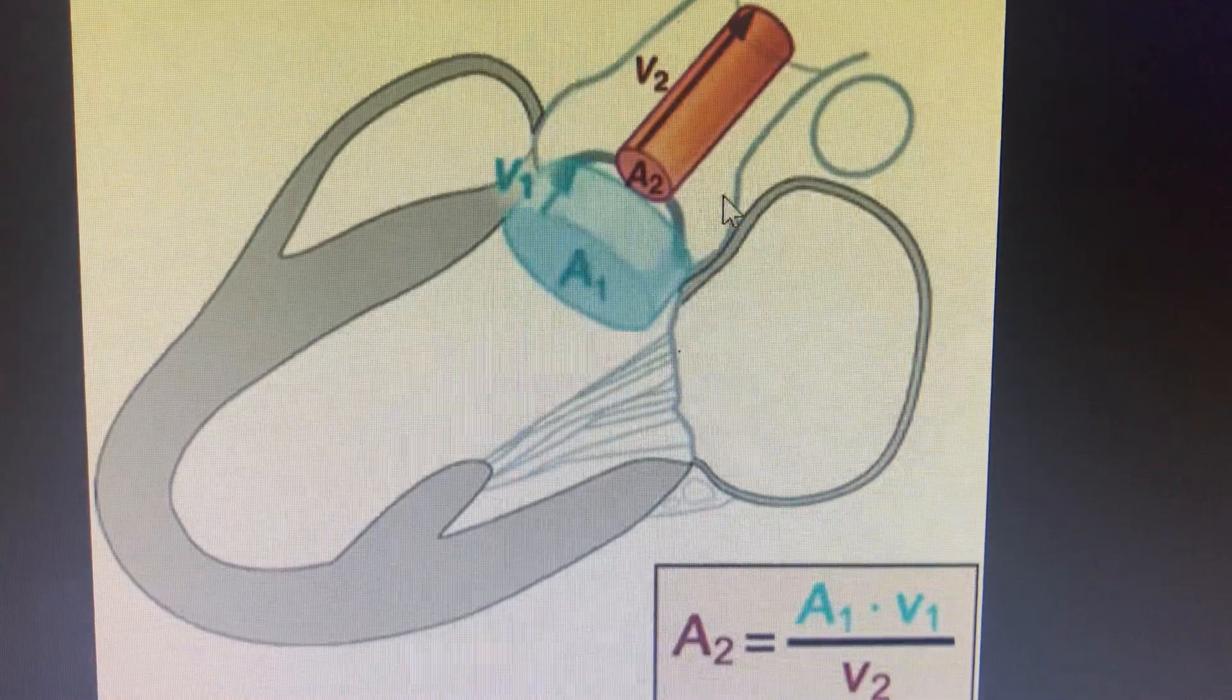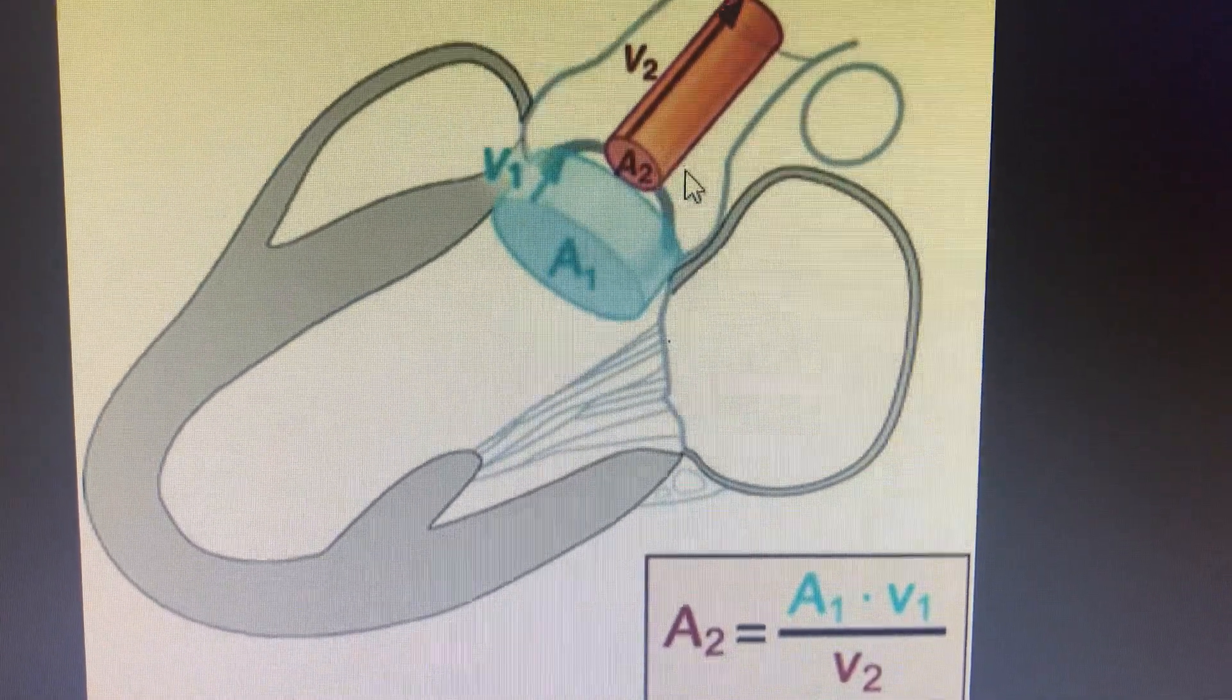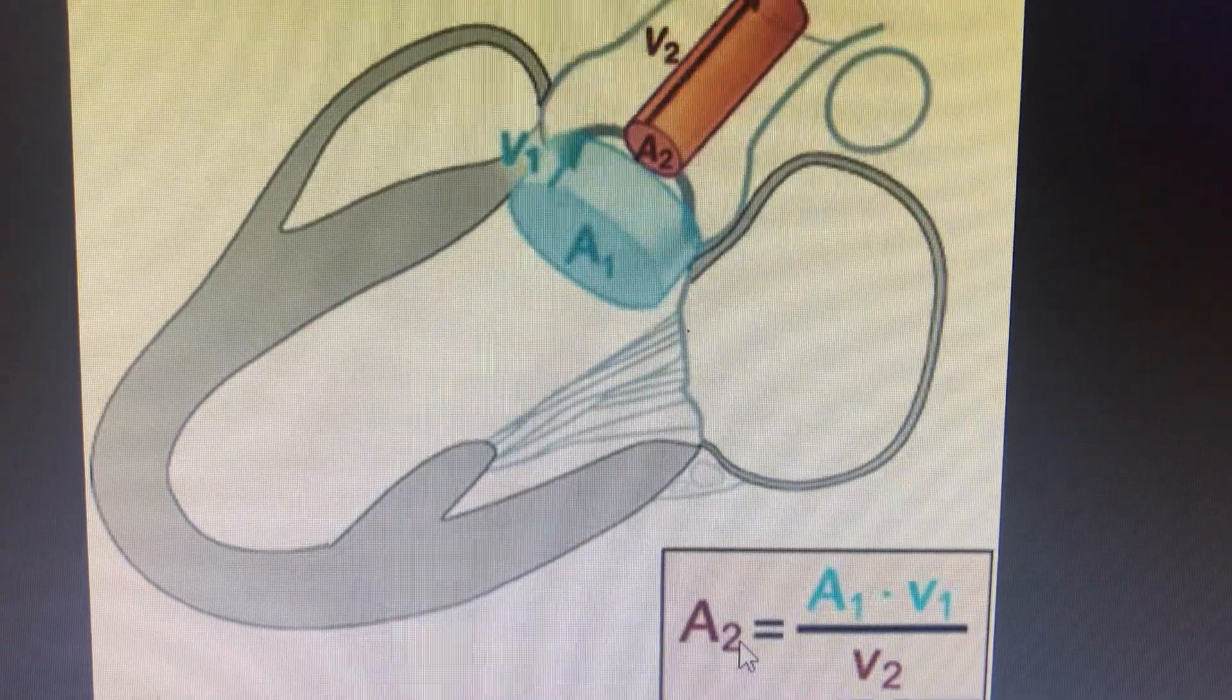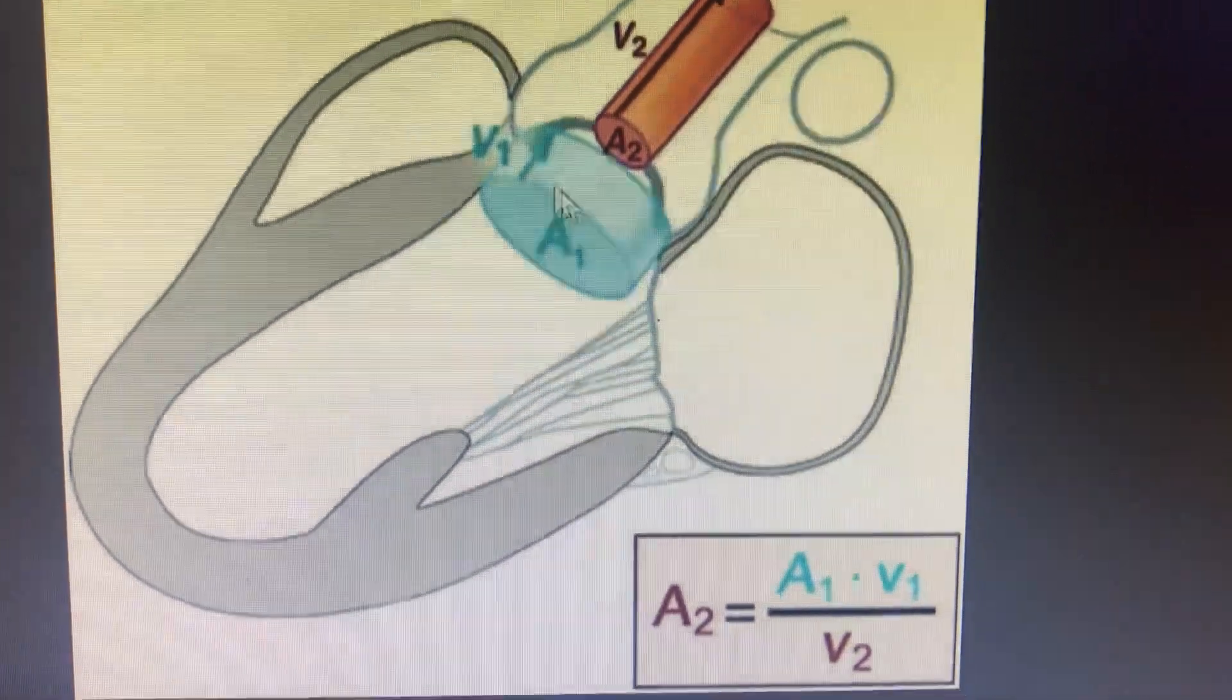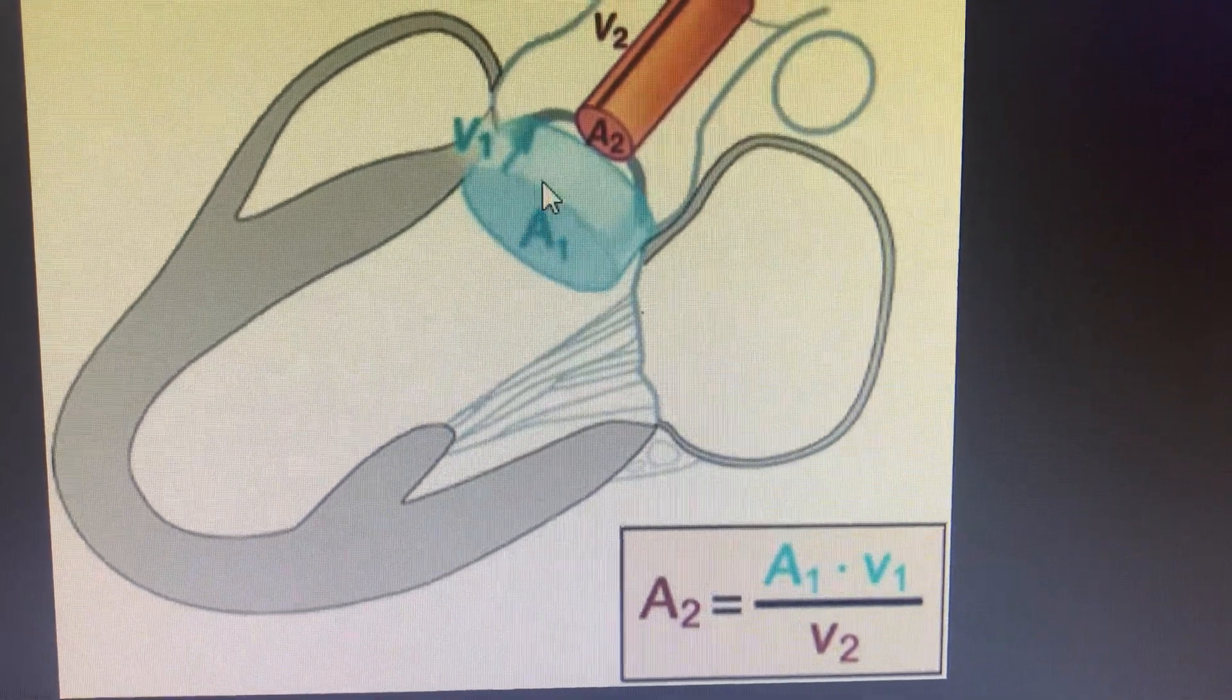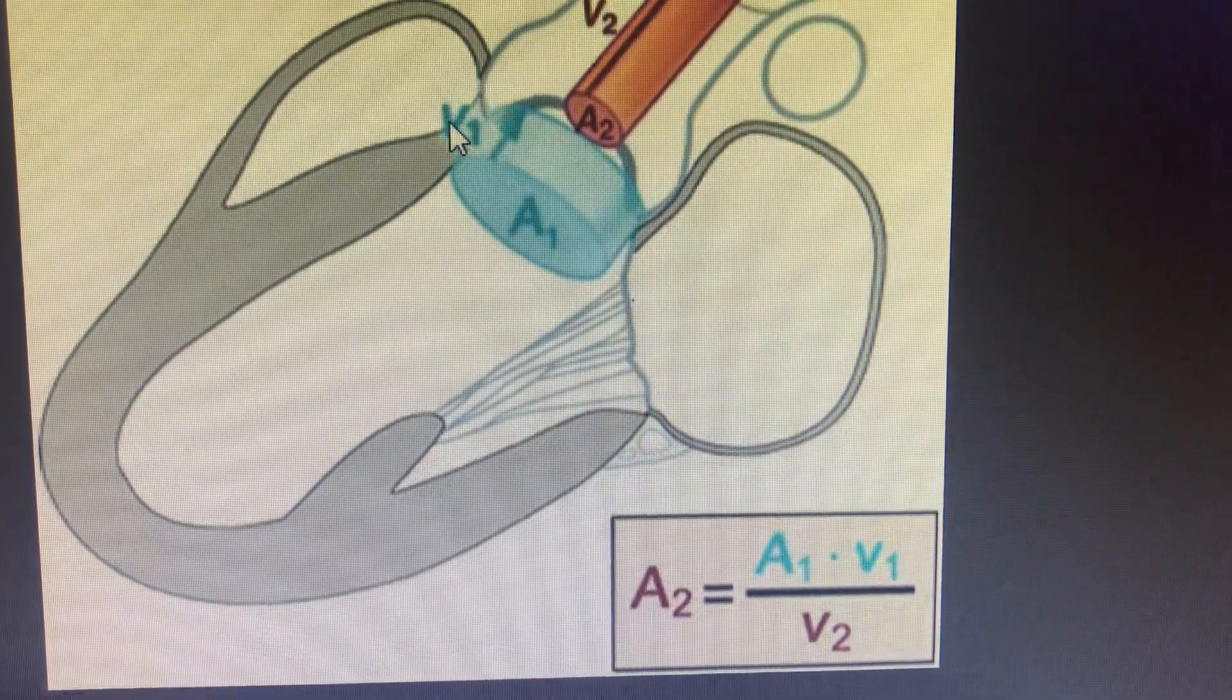We want to calculate the area at the level of obstruction, that is the aortic stenosis. So the area at the level of obstruction will become the area at the level before obstruction that we can calculate. That is in the LVOT. Just put in the parasternal view, zoom it and measure the length of the LVOT.